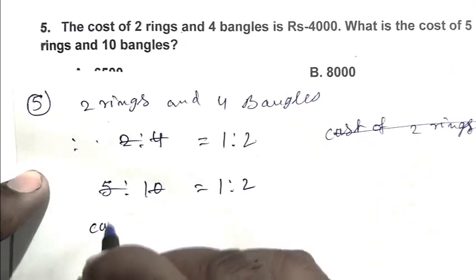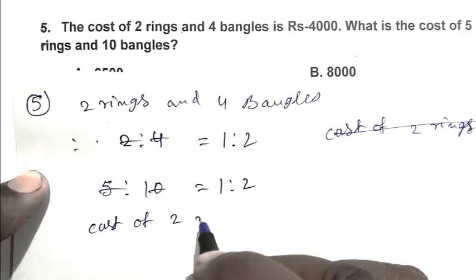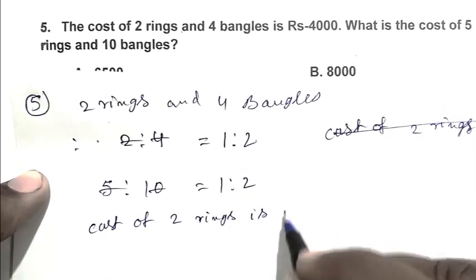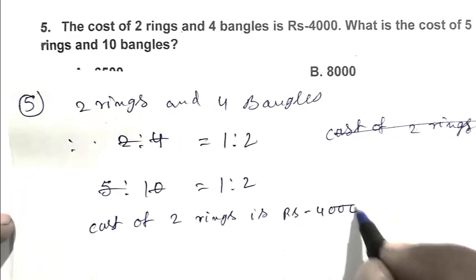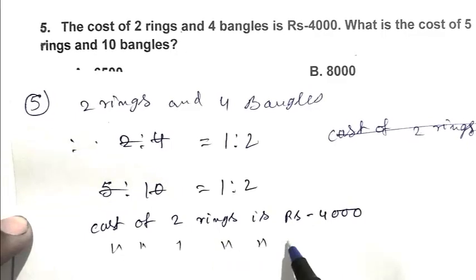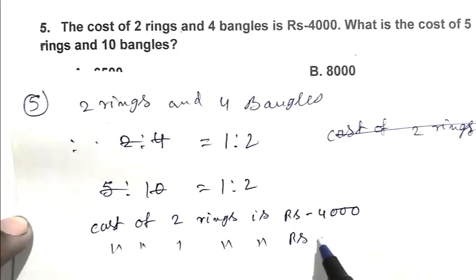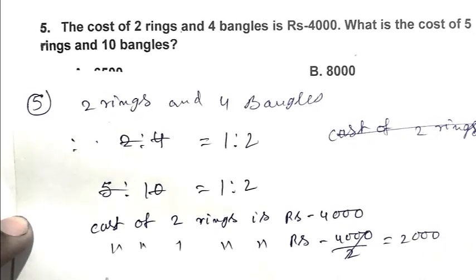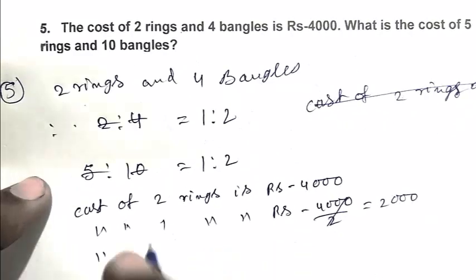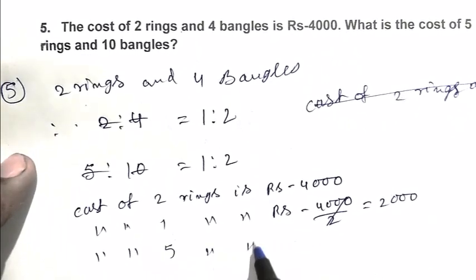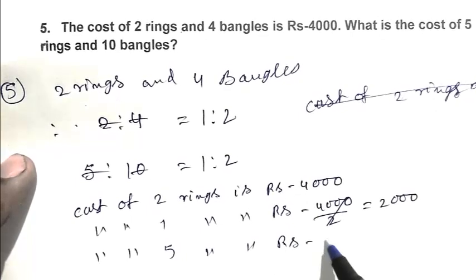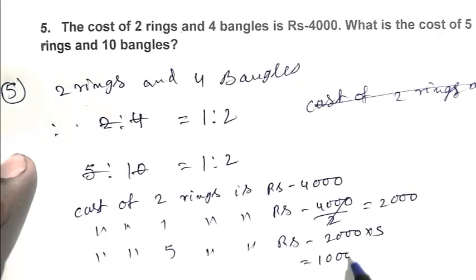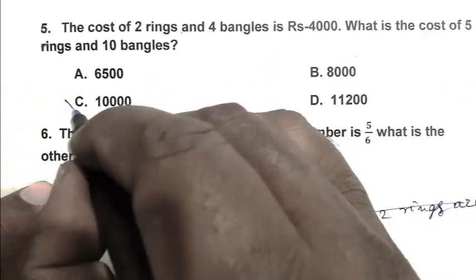So we can write cost of 2 rings is Rs 4000. Cost of 1 ring is Rs 4000 upon 2, that is 2000. And cost of 5 rings is Rs 2000 multiplied by 5, that is Rs 10,000. So C is the right answer.